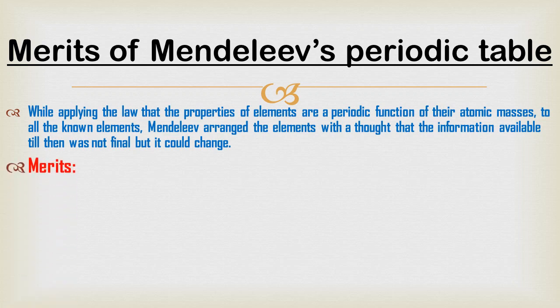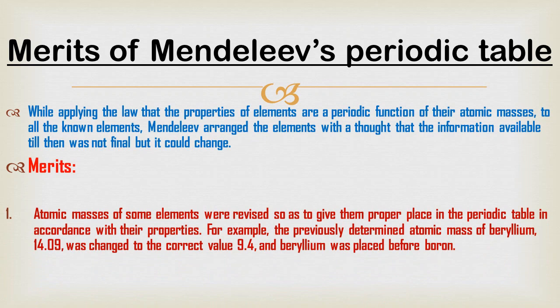The first merit is that atomic masses of some elements were revised so as to give them proper places in the periodic table in accordance with their properties. For example, the previously determined atomic mass of beryllium, which was 14.09, was changed to the correct value of 9.4, and beryllium was placed before boron. These are some revised characteristics of Mandeliev's periodic table — a revised form of Newland's law and Dobereiner's Triads law.